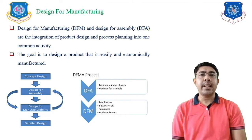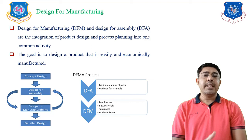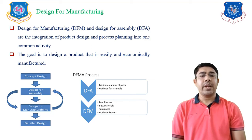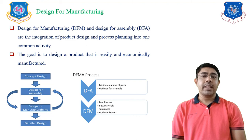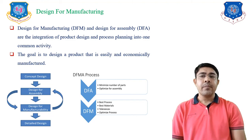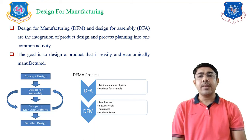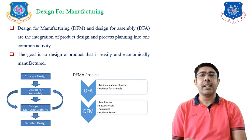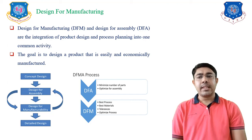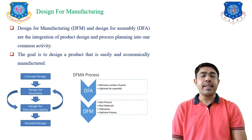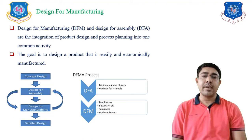In Advanced Machine Design, there are Design for Manufacturing and Design for Assemblies. It is the design of components done by considering the aspects of manufacturing and assembly. Both are integrated to each other. Design for Manufacturing and Design for Assemblies are the integration of product design and process planning into one common activity. The design process starts with Concept Design, then Design for Assemblies and Design for Manufacturing, which are integrated and done vice versa, as shown in the left side figure.